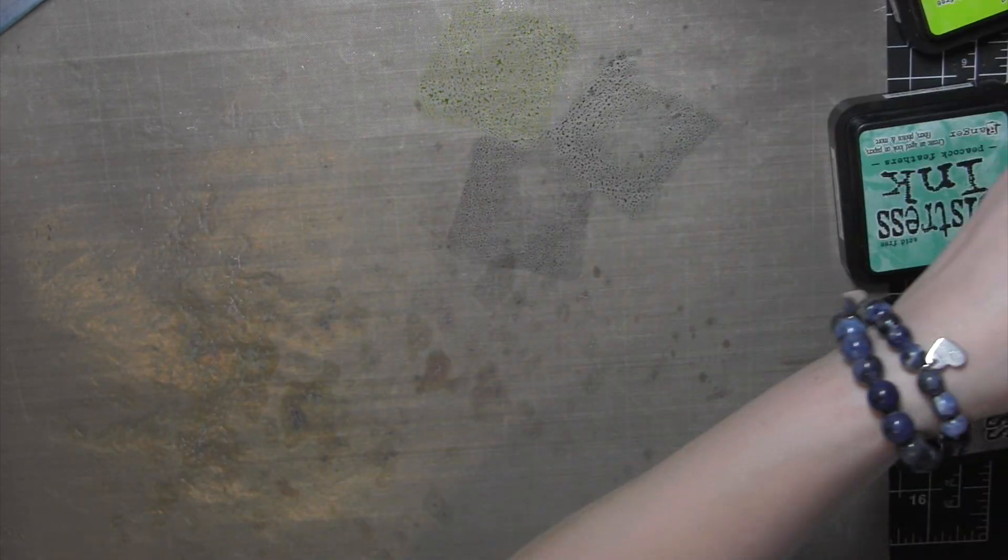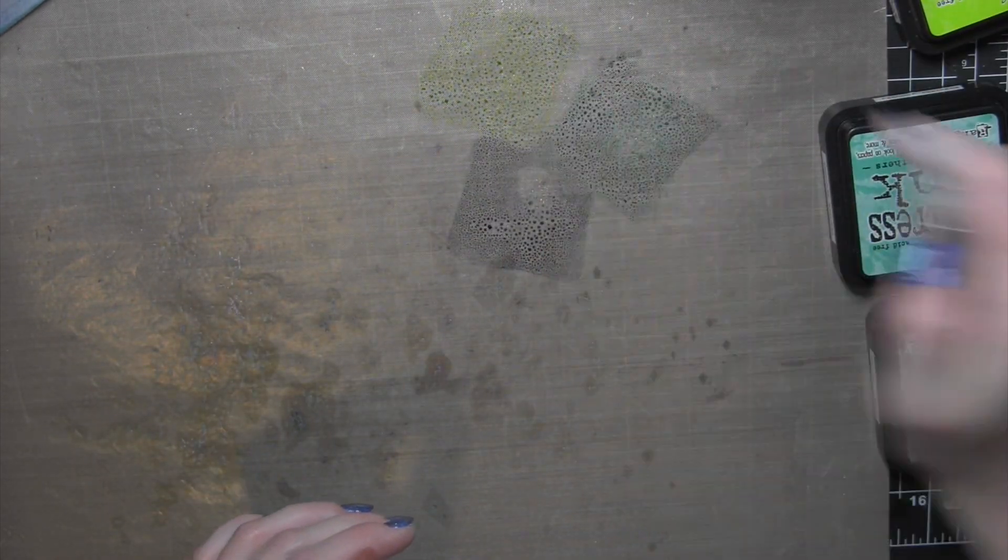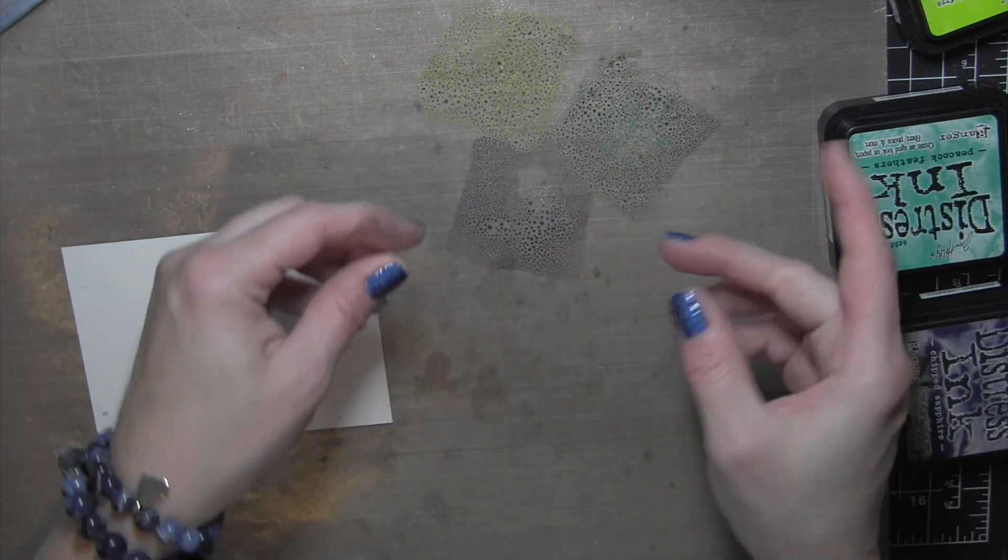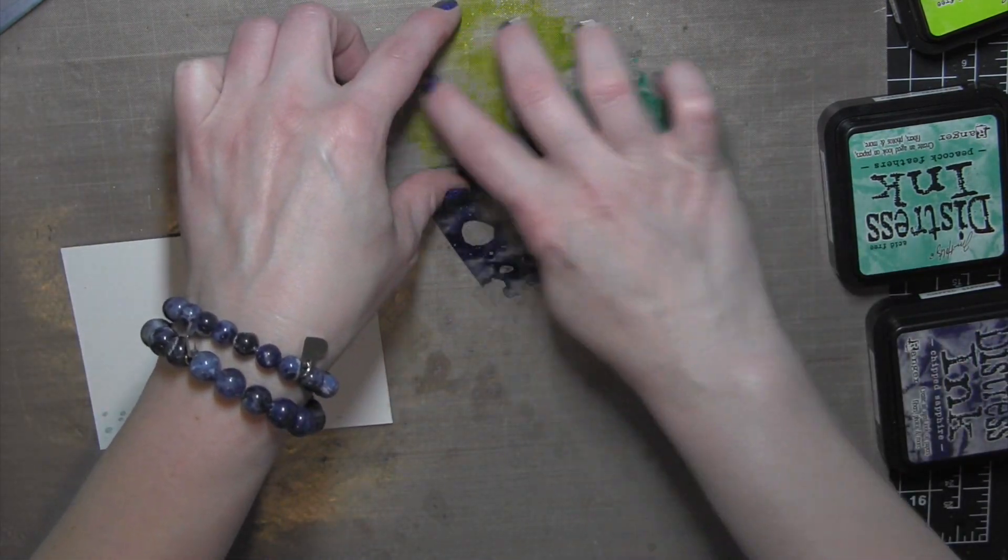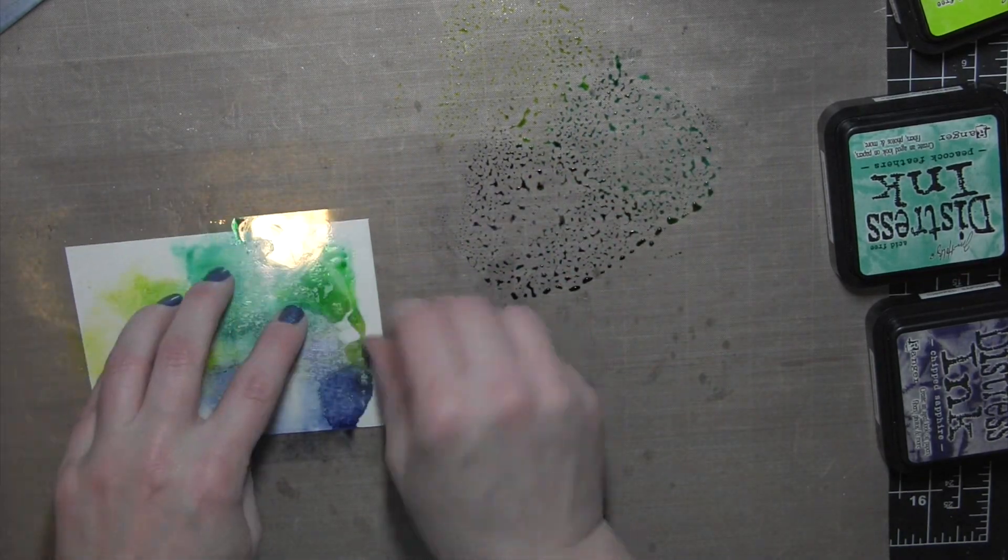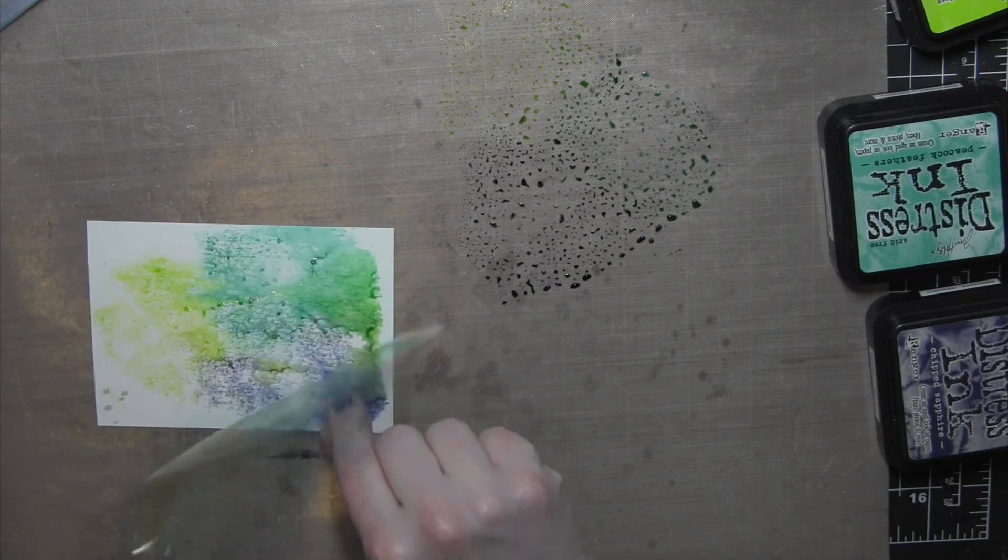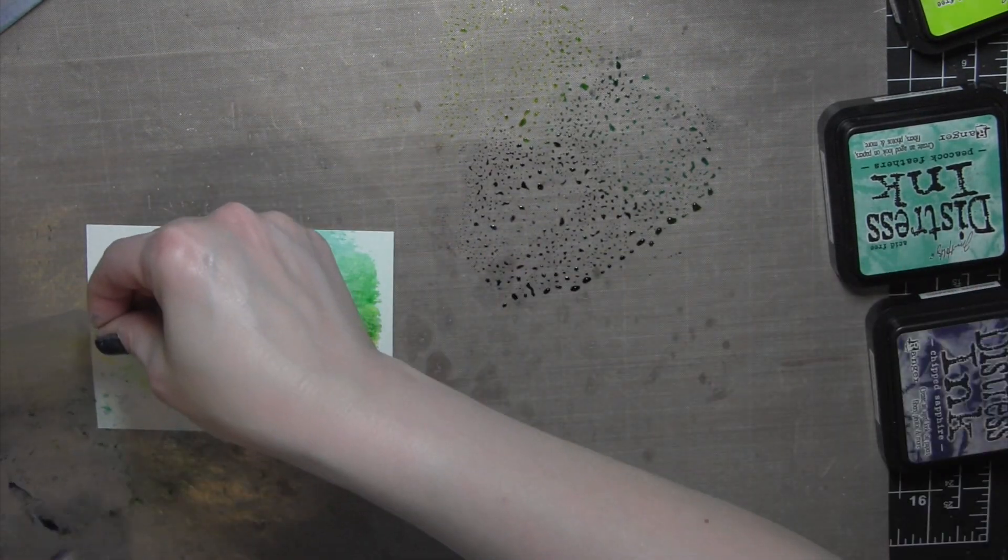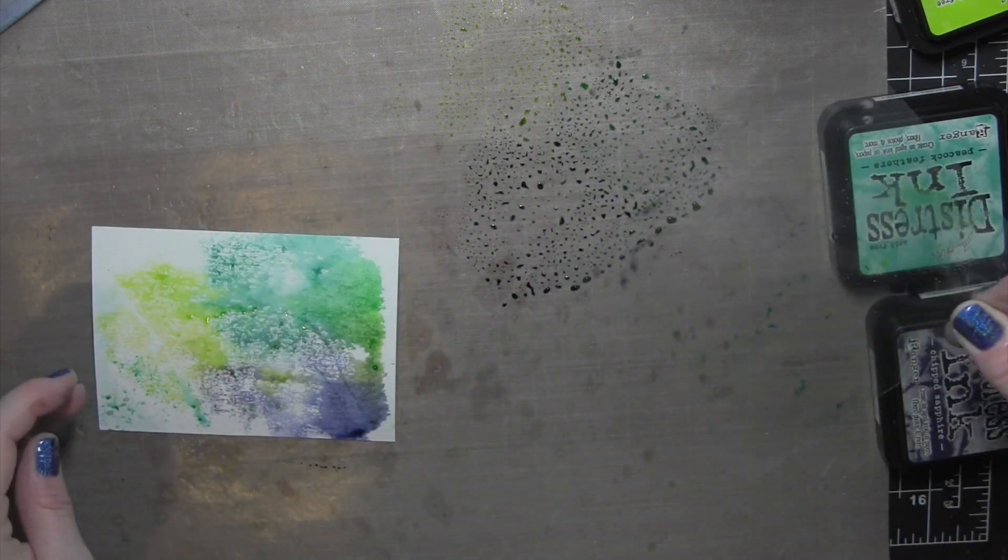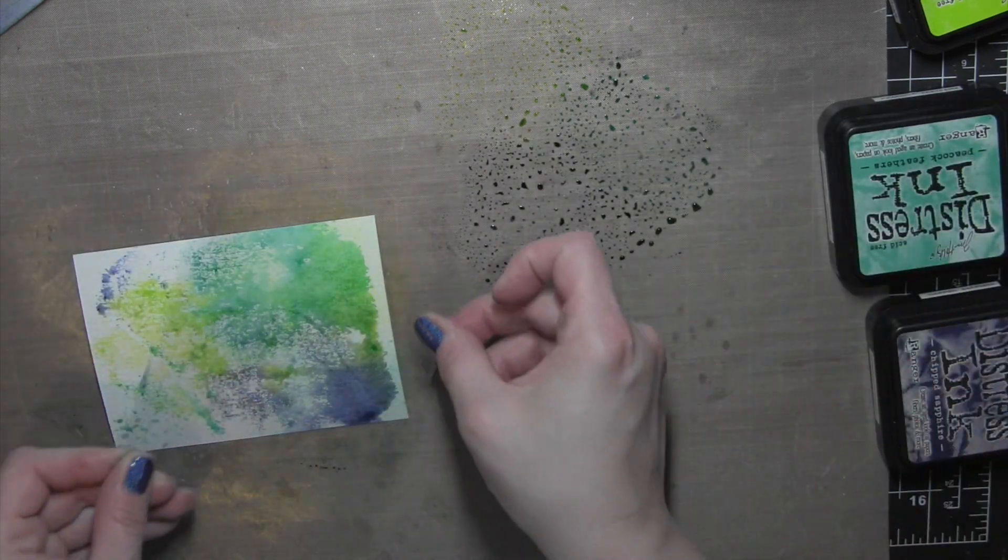I'm going to create some watercolor backgrounds using the ink smushing technique. I am using Chipped Sapphire, Peacock Feathers, and Twisted Citron Distress Ink, spritzing it a time or two there on my craft sheet. You don't want to get it too saturated. It depends on the look you're going for. You can definitely use as little or as much water as you want.